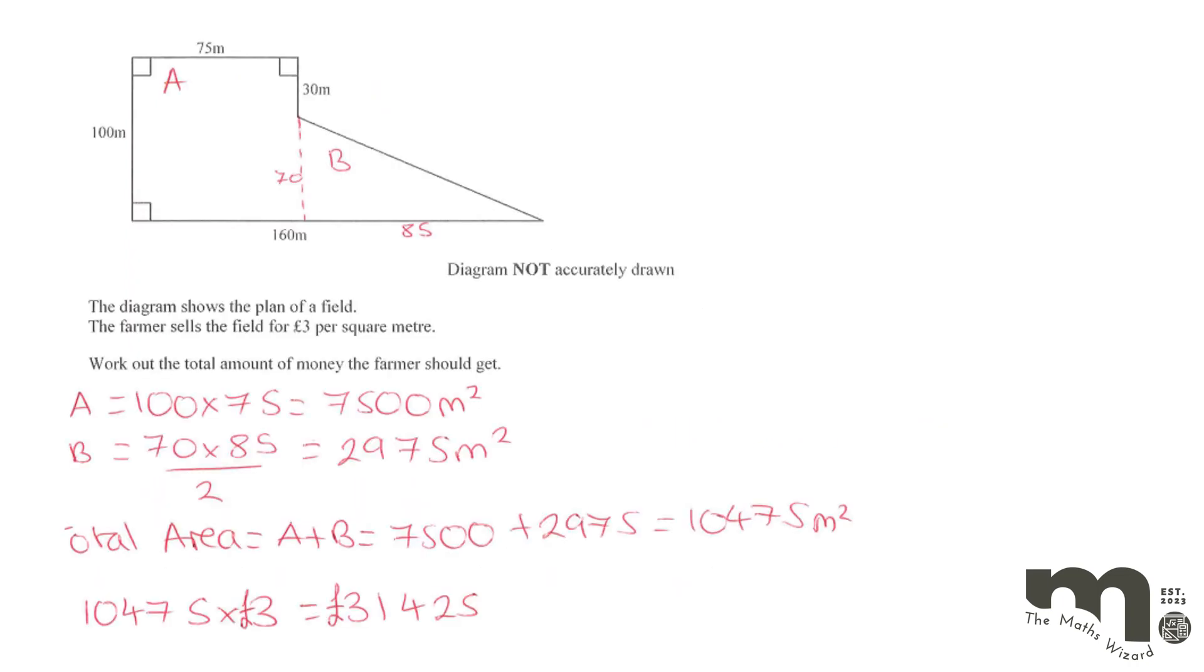Okay so we've got the fully correct working out for this all written out nicely. So we've got shape A here, so this has been split so we've got this rectangle at the top so that has an area of 7,500 meters squared. Then if we look at the triangle, this has got to be 70 because that's 70 and that 30 make 100. So 70 times 85 divided by 2 will tell you the triangle has an area of 2,975 meters squared. If we add both of those together we get 10,475 meters squared.